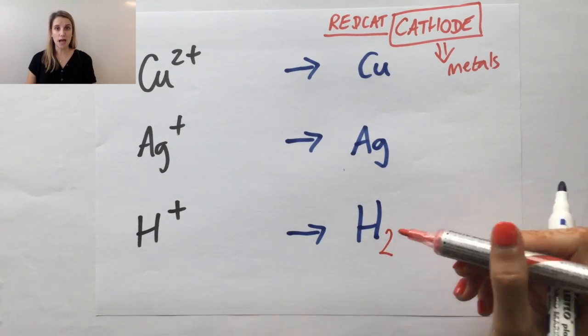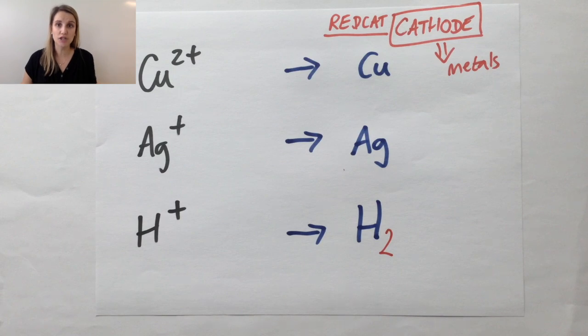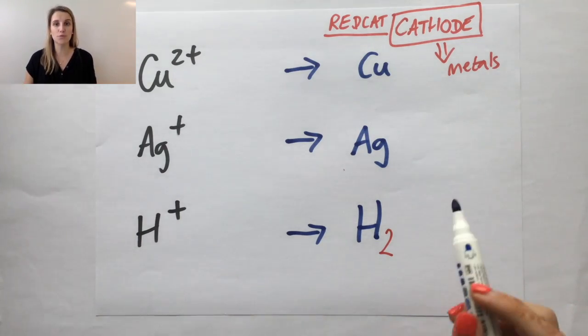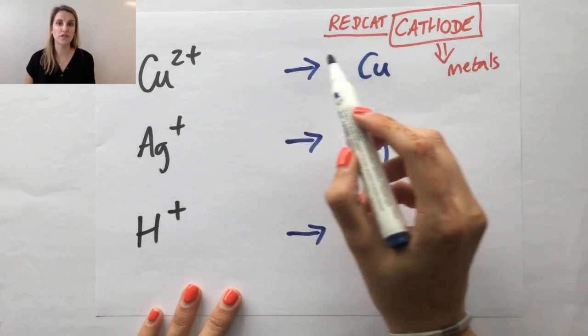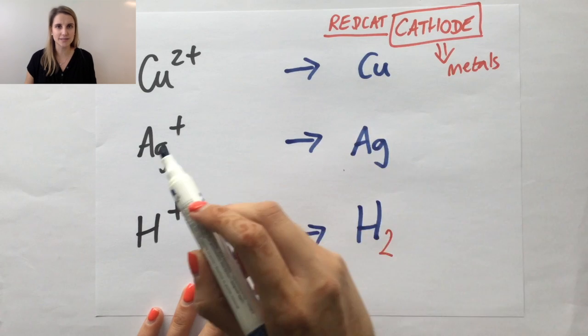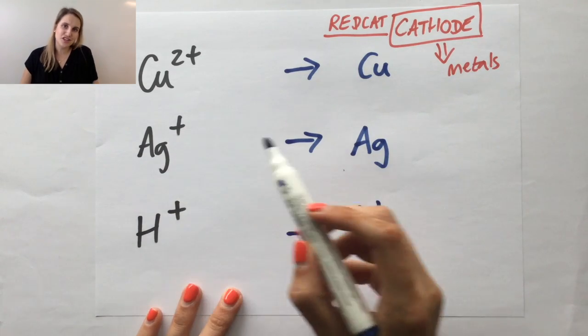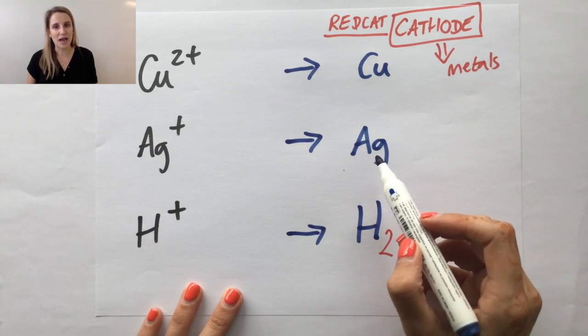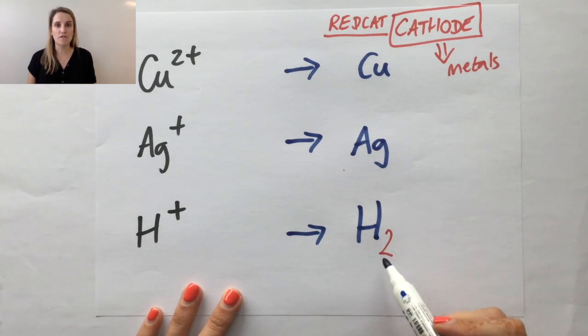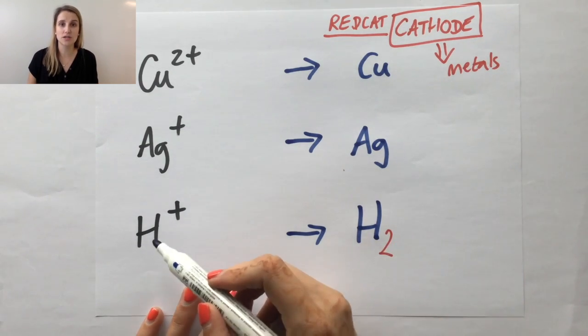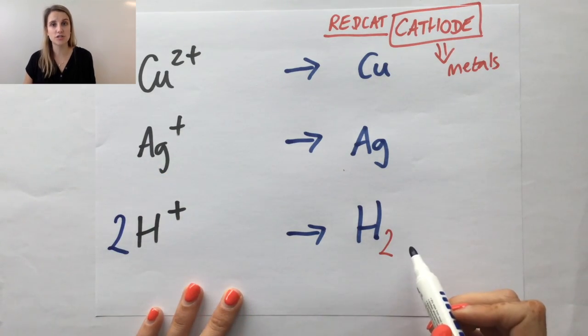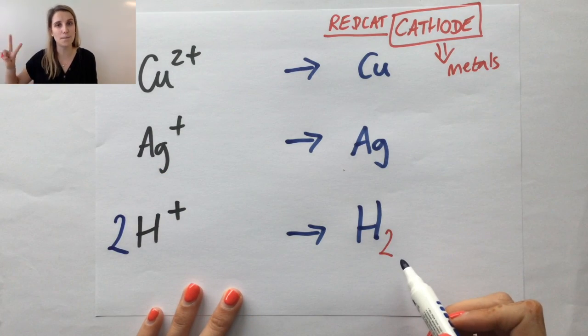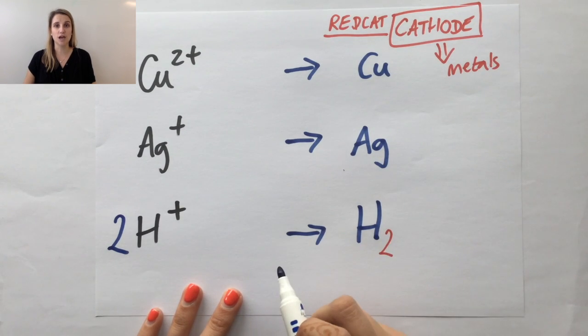The first step in working out your half equation is to balance the atoms on both sides of your equation. So here, the copper, I've got one copper on the left, one on the right, it's all balanced. For the Ag, one Ag on the left, one Ag on the right, all balanced. The bottom one, however, I've got one H⁺ on the left, so one hydrogen, and I've got two hydrogens on the right. So that means I need to add a big 2 in front of that H⁺ to balance out those atoms.